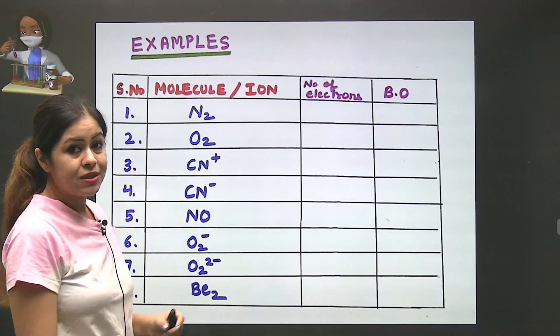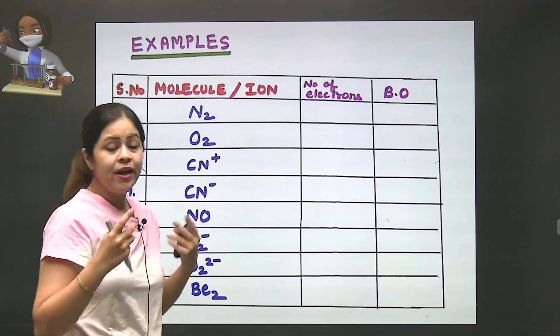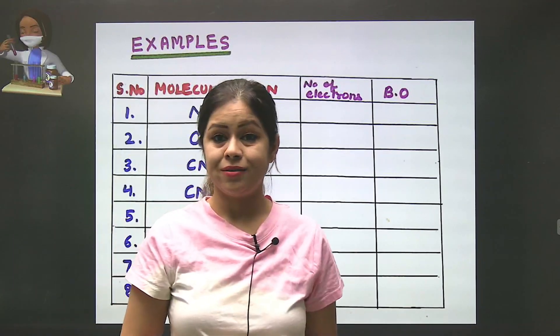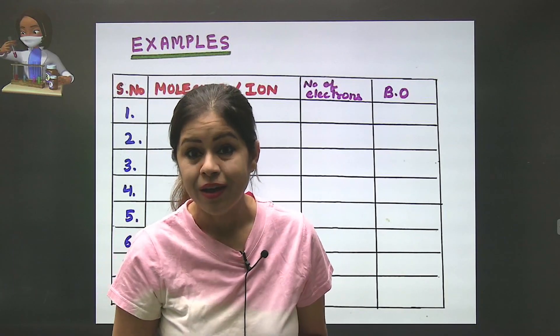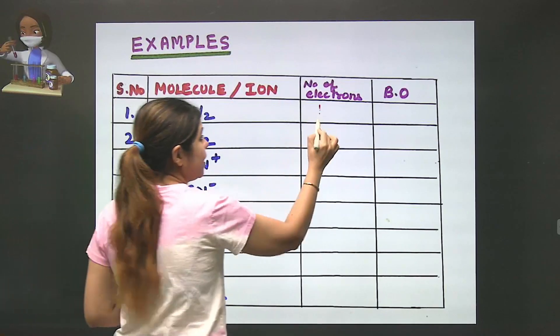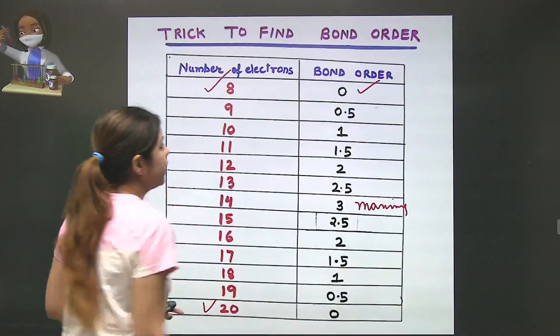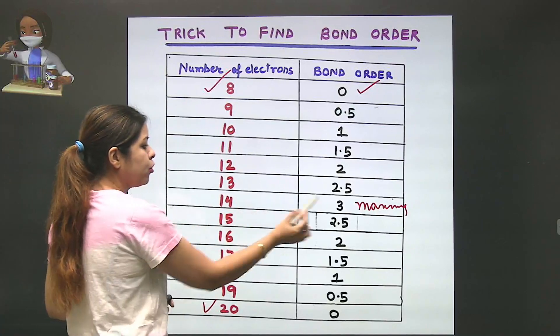Let us take an example of the N2 molecule, nitrogen. How many electrons are in nitrogen? 7. So how many in the nitrogen molecule? 14. What is the bond order for 14? 3. Remember that 3 is the maximum.